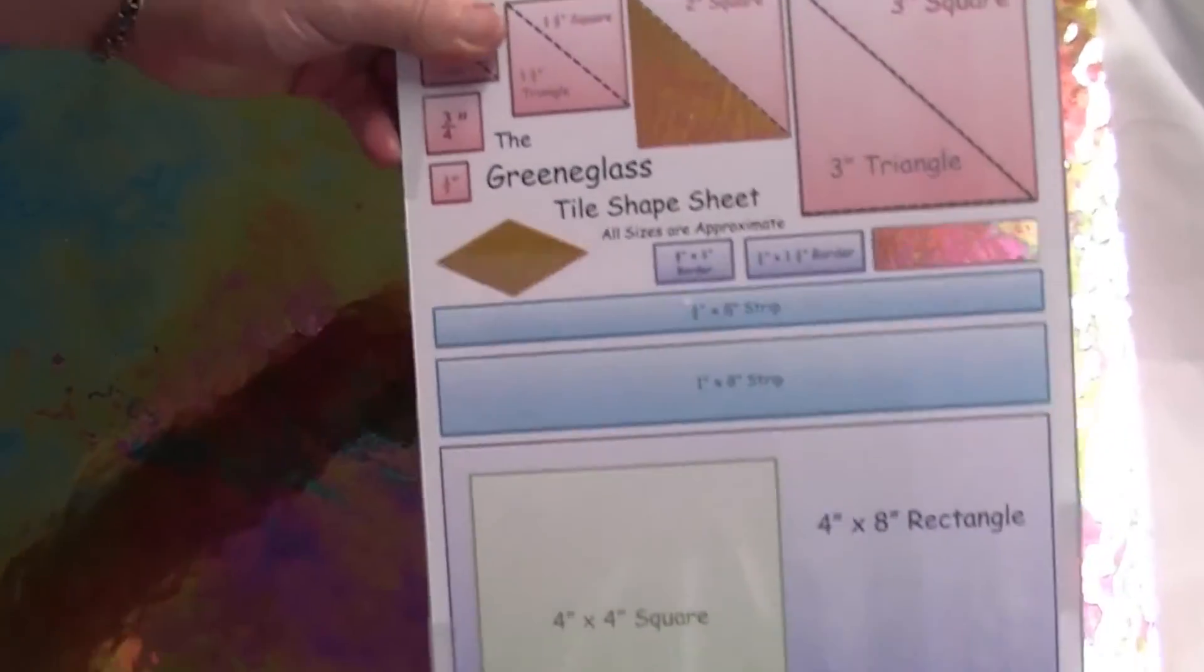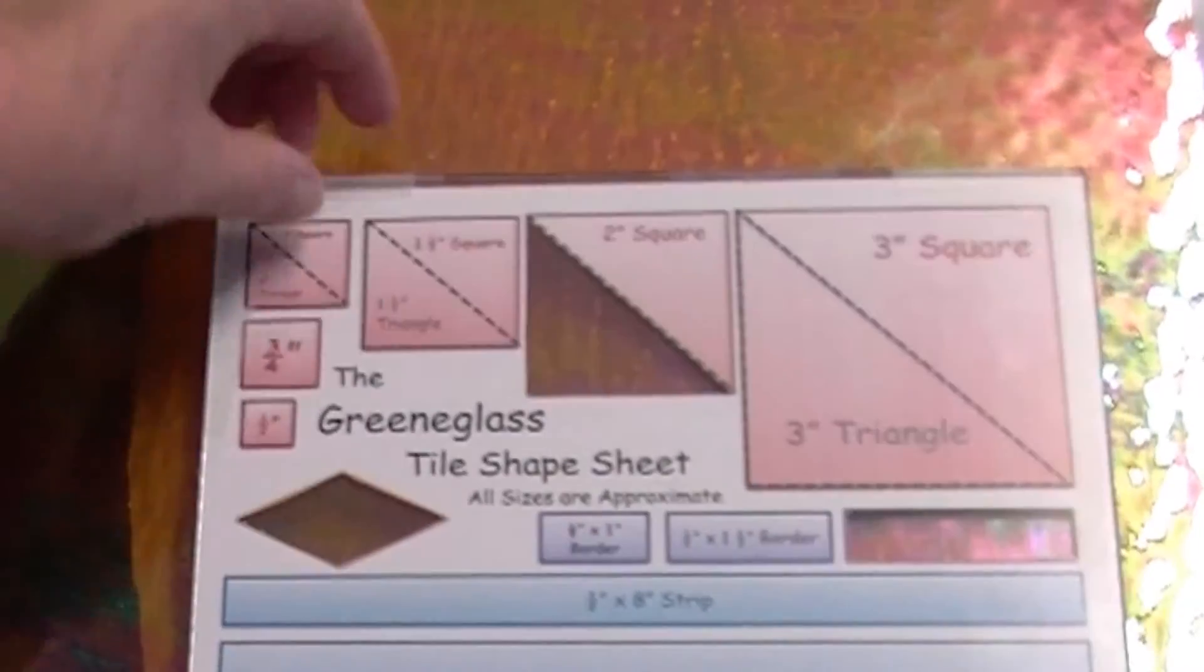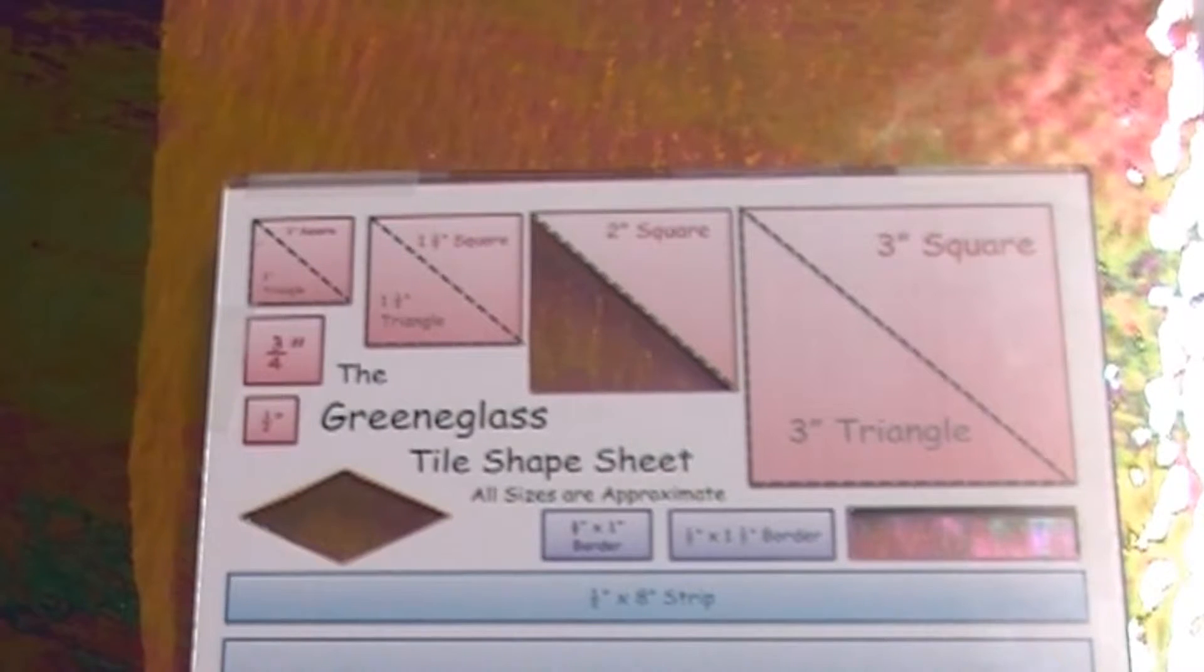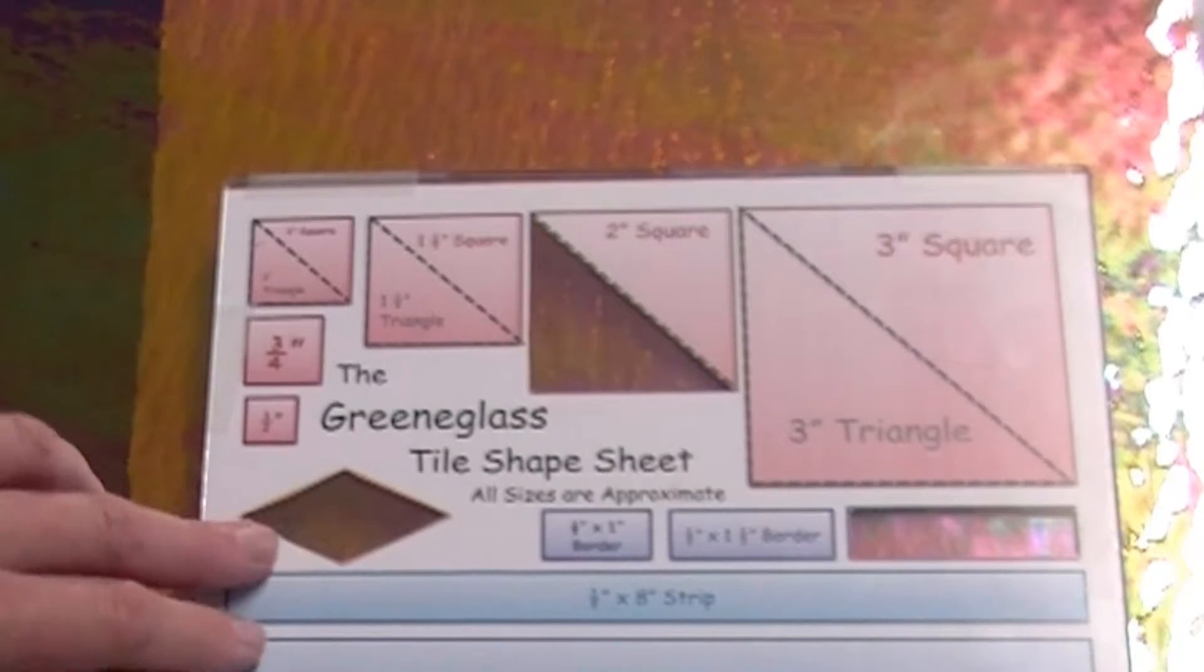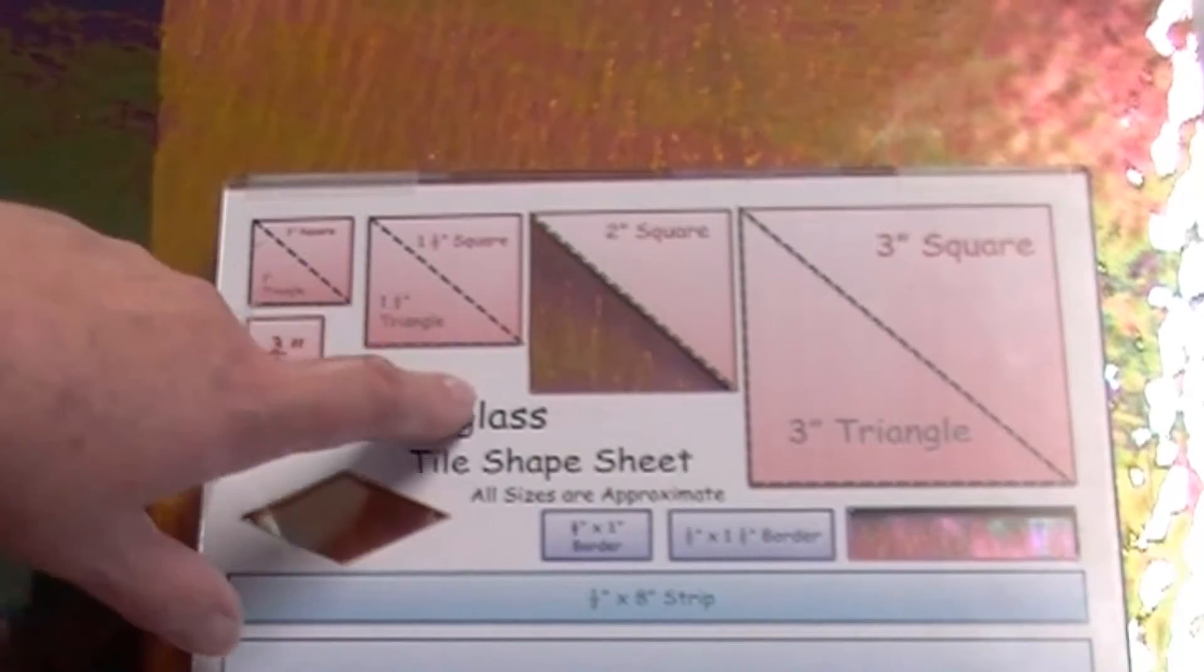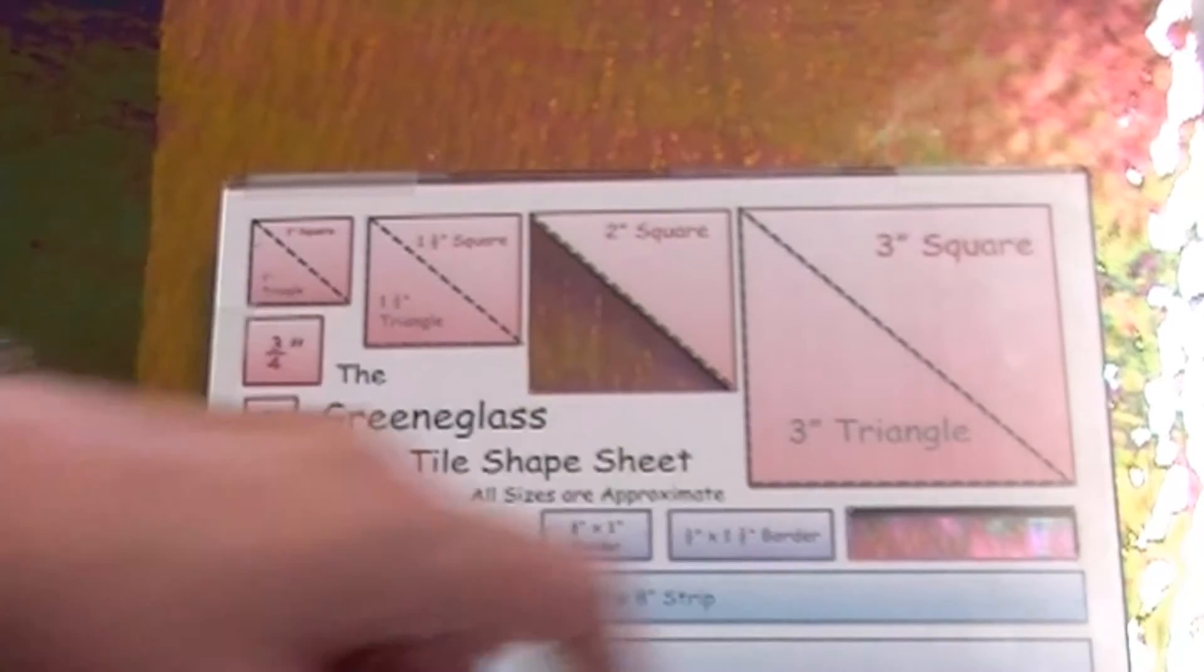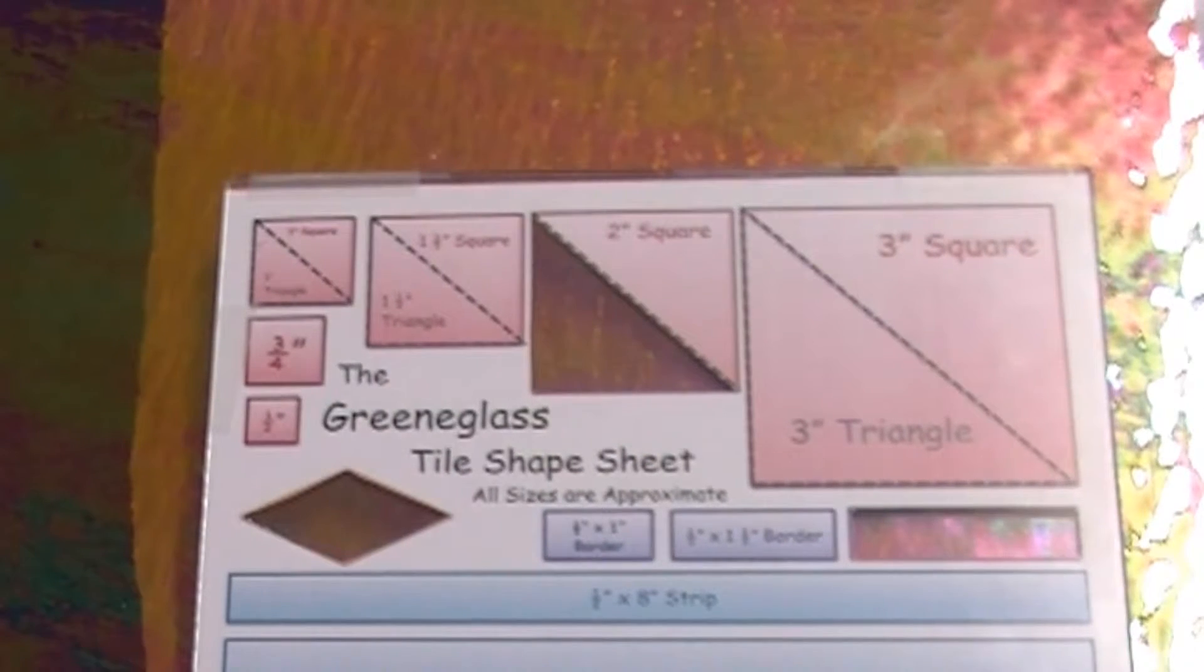Now to give you an idea of what it would look like cut up into pieces, this is our tile shape sheet. You can see the diamond, our two-inch triangle, and our largest border piece to give you an idea of what it would look like basically cut up.